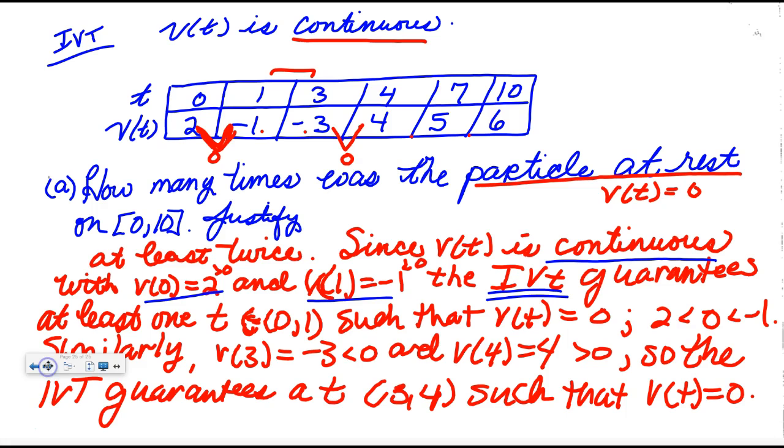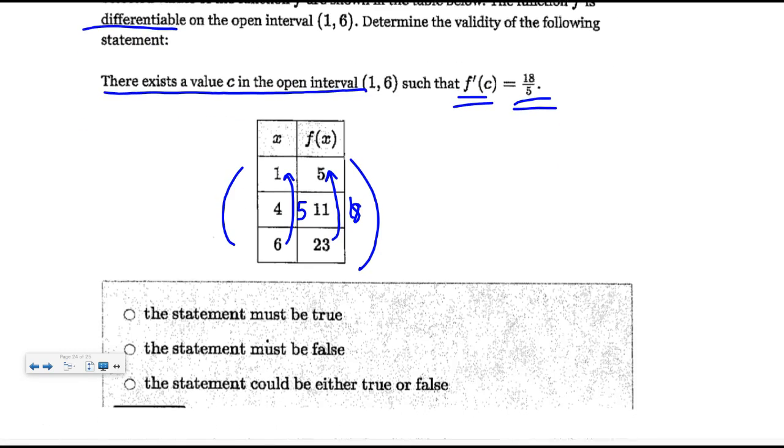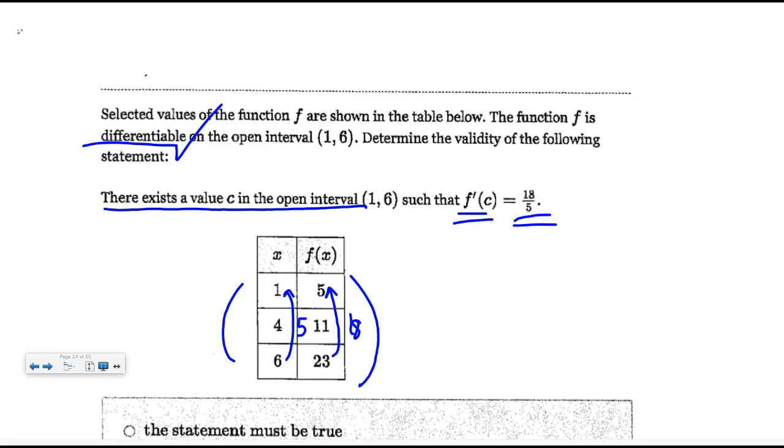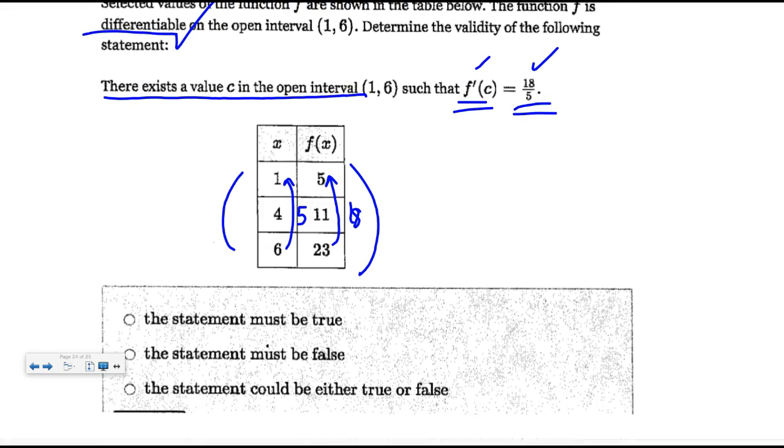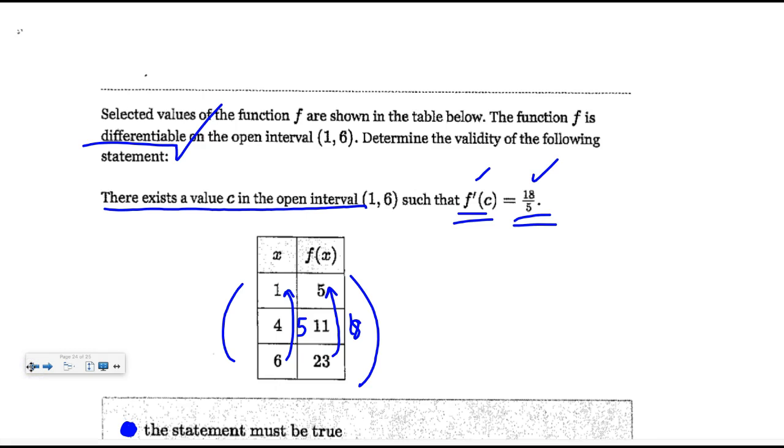This is actually off of delta math. Selected values of F are shown on the table below. F is differentiable, so they're meeting the hypotheses. Determine the validity of the following statement: There has to be at least one C on the entire interval such that the derivative equals 18 fifths. Let's do our change in Y, 18, over change in X, 5. 18 fifths is the slope of the secant line between 1 and 6. Well, since the function's differentiable, the MVT guarantees at least one place where the derivative has to equal 18 fifths. So I would say this statement must be true. Done at 30 minutes. You get credit just for the notes only. Have a good one.